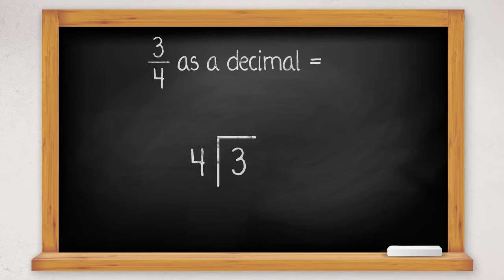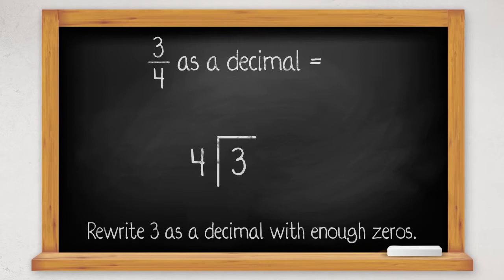We write out the division and start by trying to divide 4 into 3. 4 won't go into 3, so we rewrite the whole number 3 as a decimal number by writing it as 3.0 or with several zeros in case we need more than one.